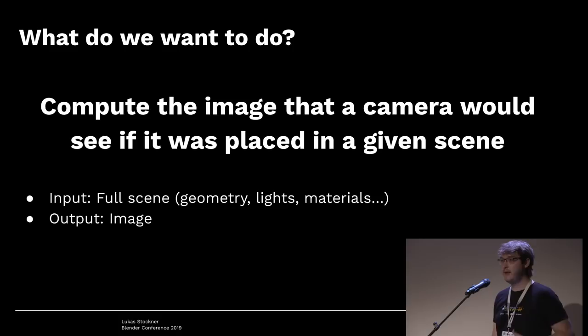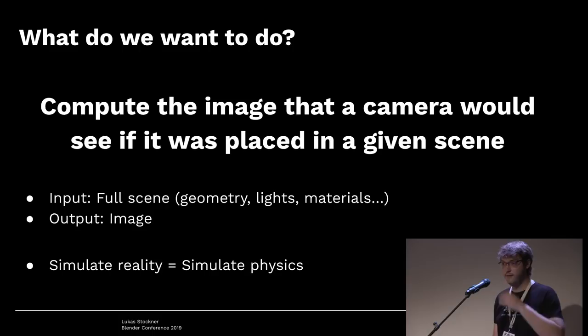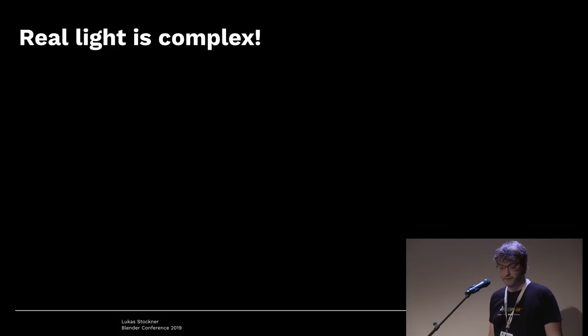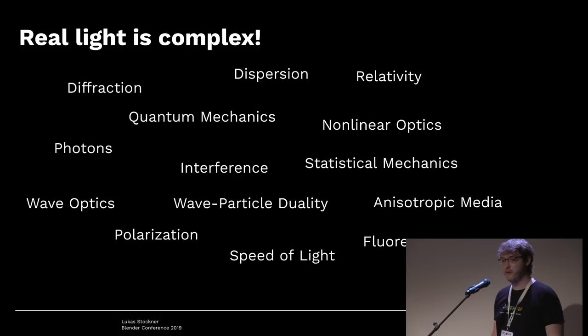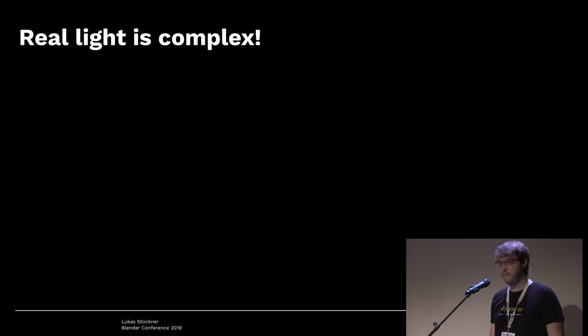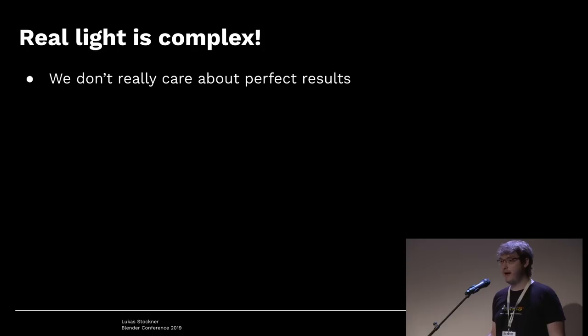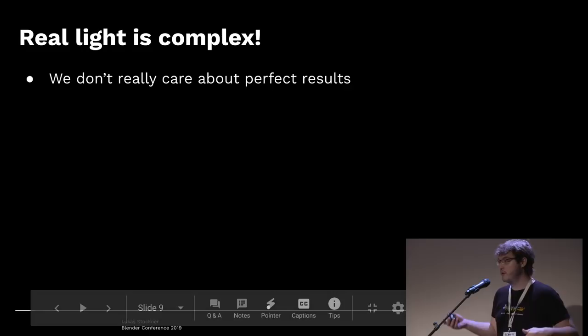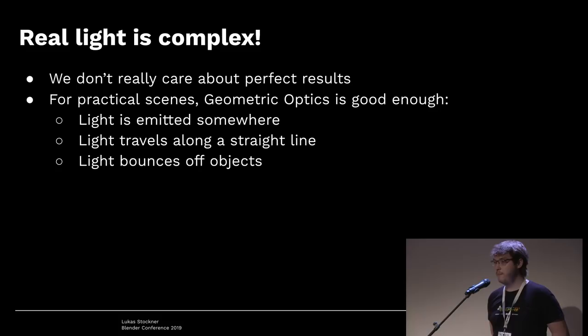To get that image we want to simulate reality, which means simulating physics. However, real light is pretty complex — here's just a selection of things you might need to consider. We look at all of that and say: no, we don't want to deal with all of that. We want something actually feasible. It turns out we don't need to simulate everything, because while real light is complex, most effects don't really matter for the usual scenes you'd like to render.